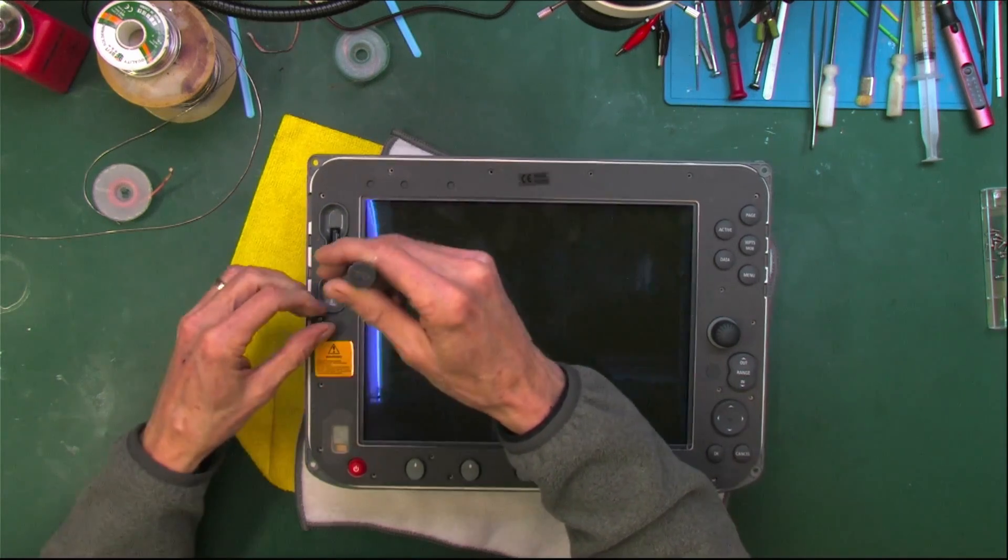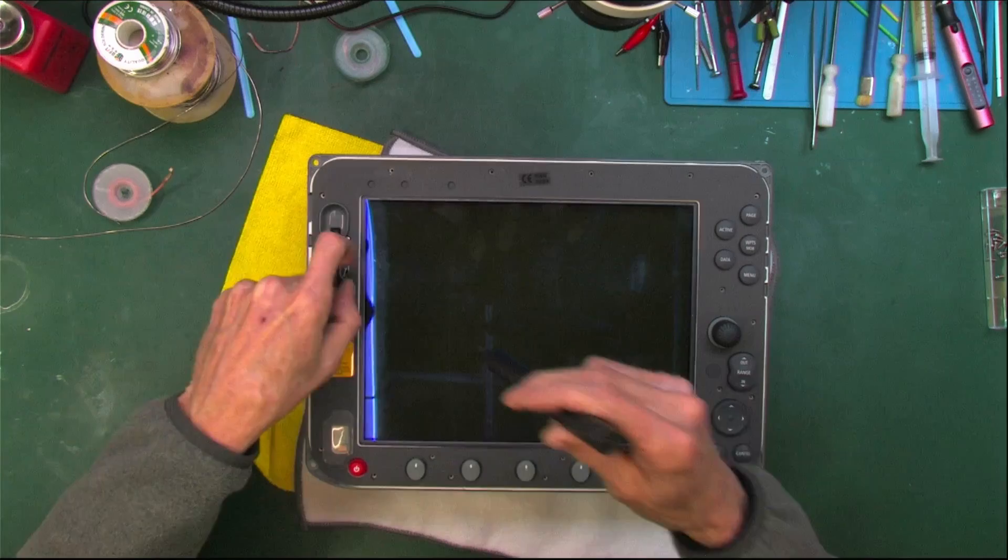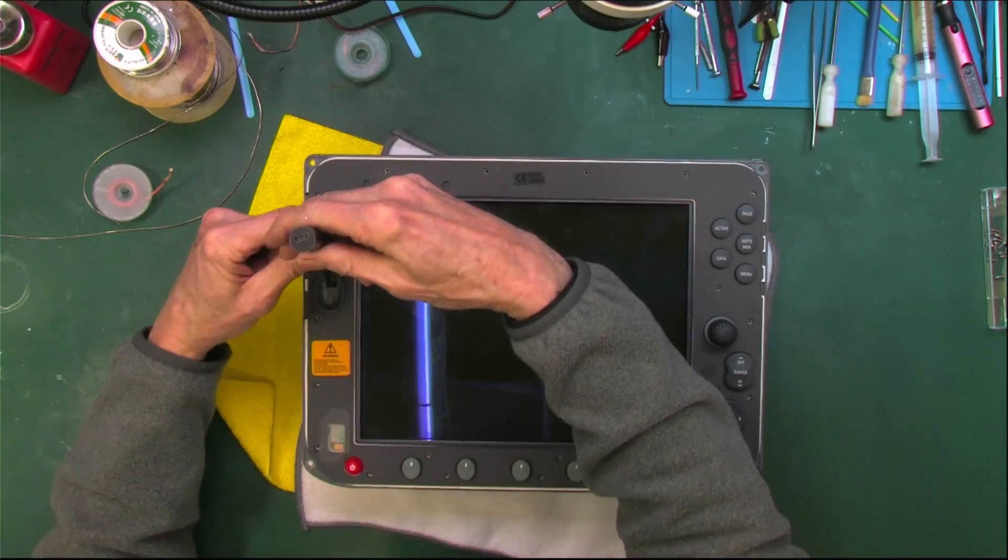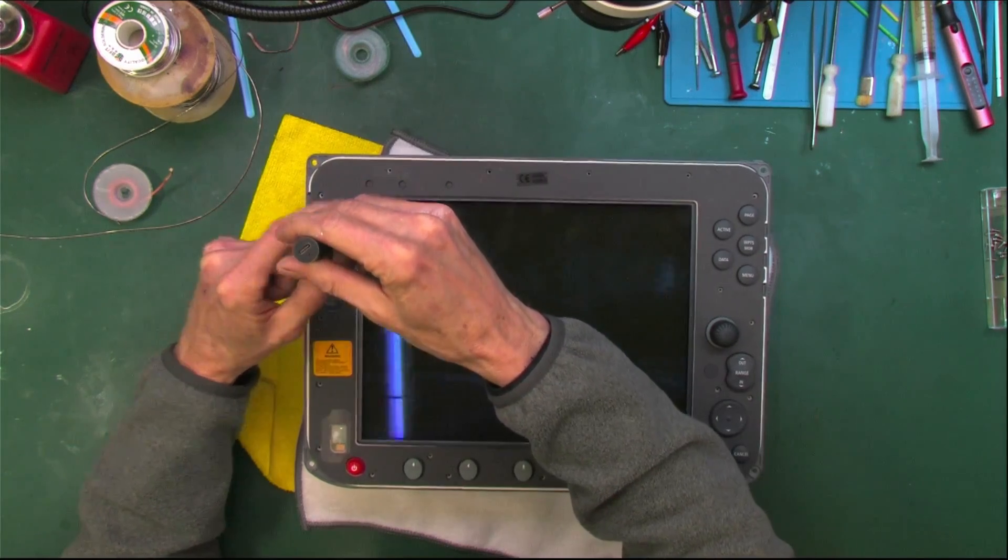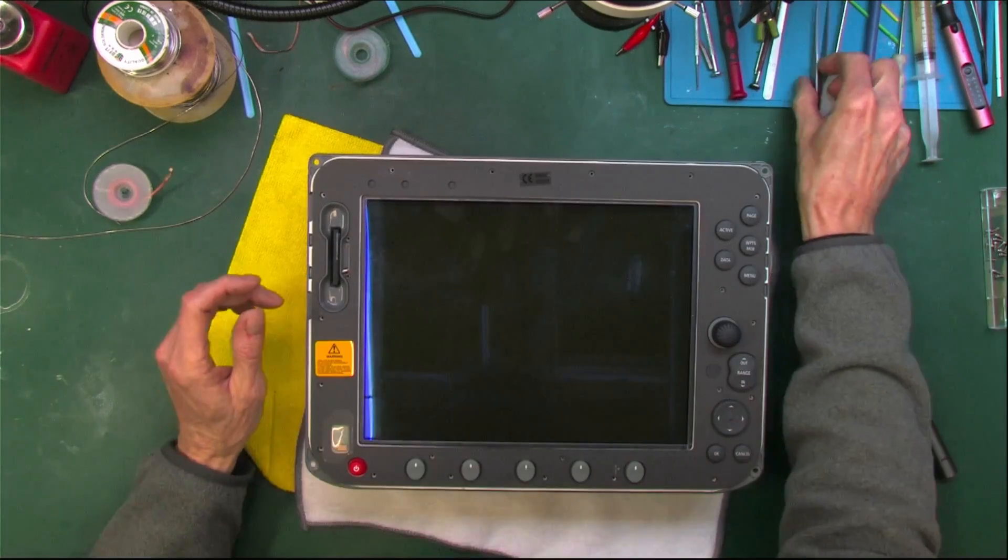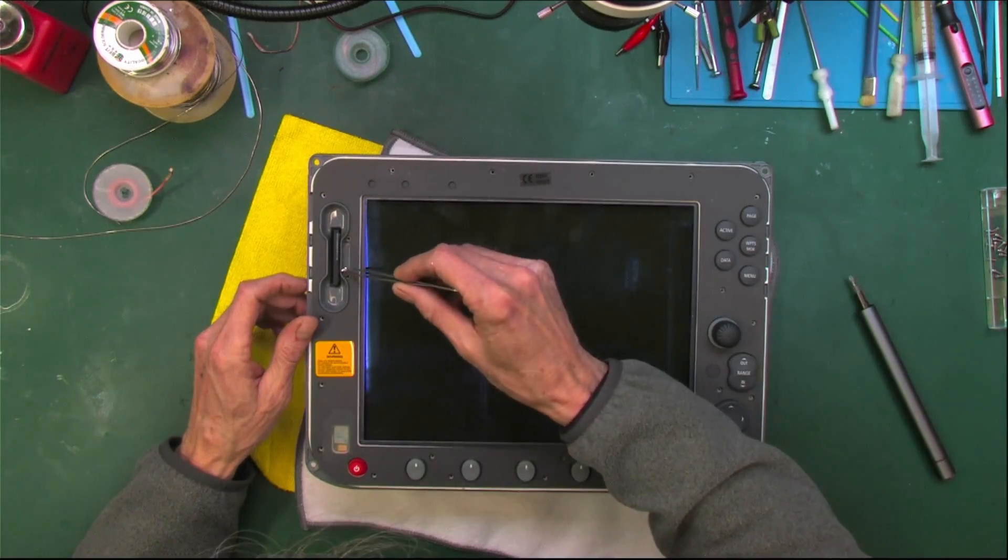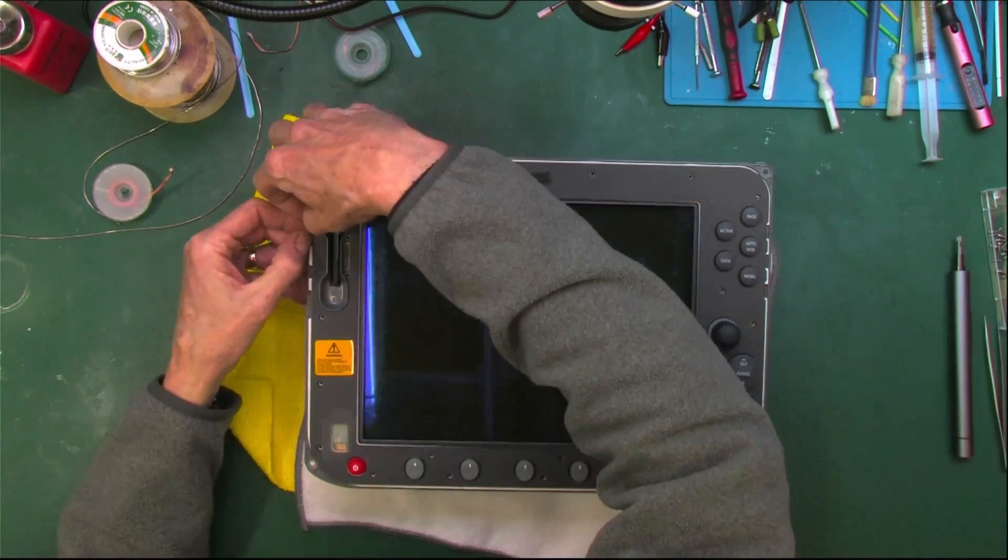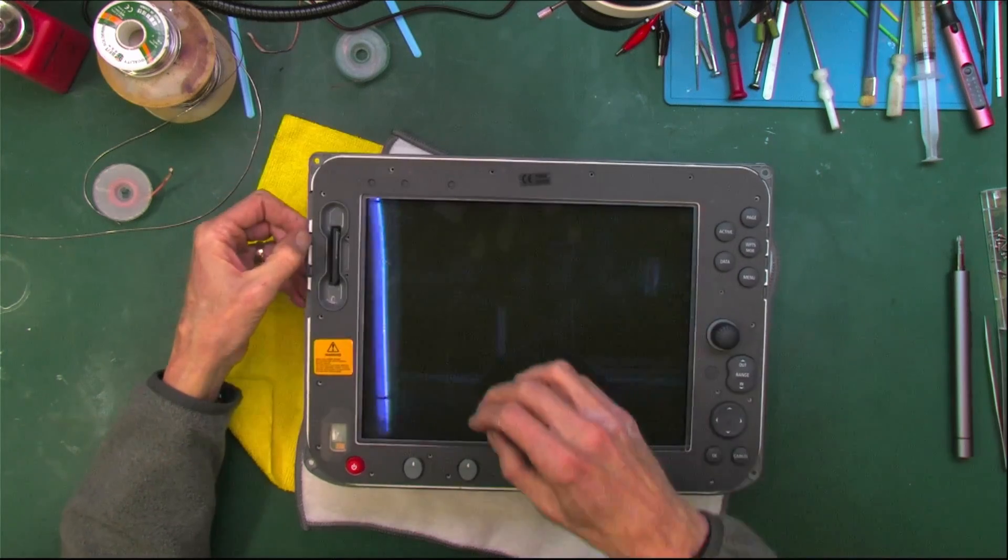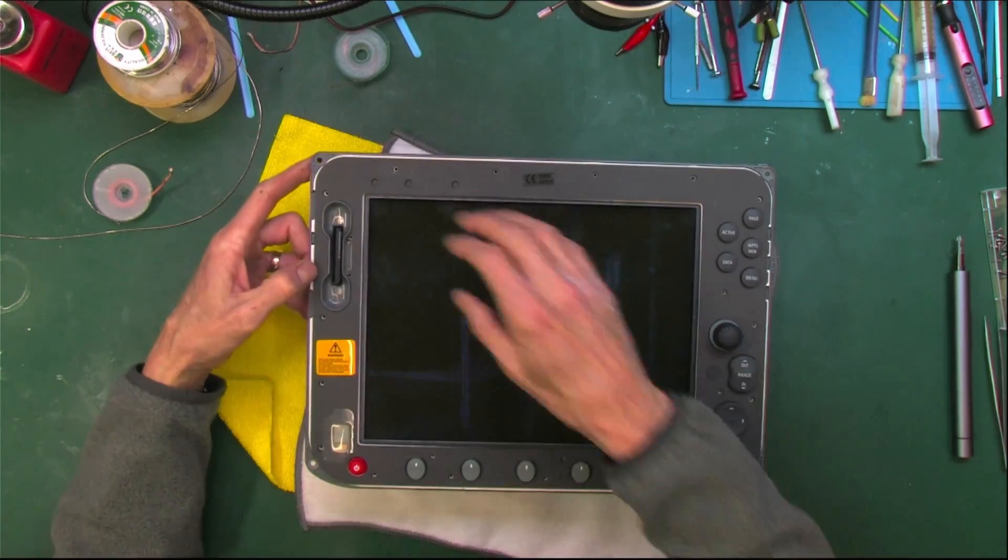So this is probably going to be a couple parts. We're going to get it open and then we're going to be able to ID what we may need to get. We're either going to retrofit the CCFL backlight to an LED or we're going to get a couple new LED tubes.